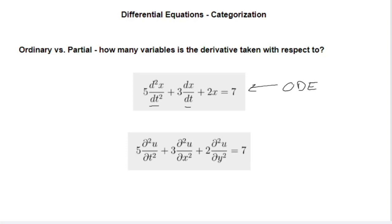If we look here, we can see we already have partial derivatives, and we can see that we have our partial derivatives taken with respect to t, x, and y. So there's three different independent variable types. This is a partial differential equation.